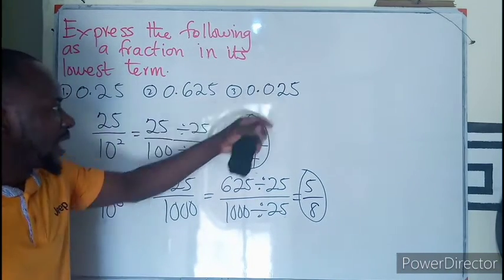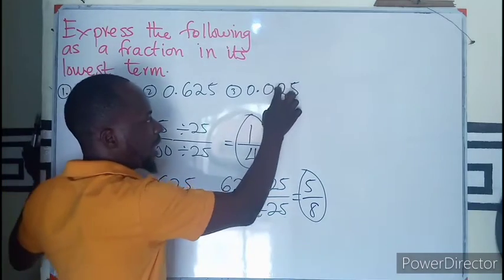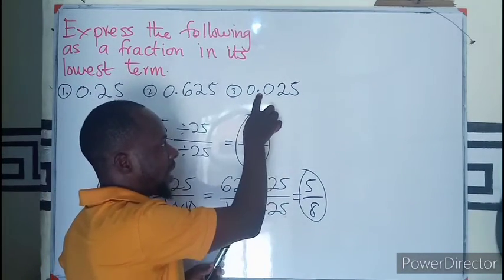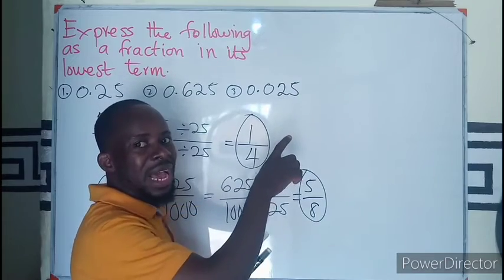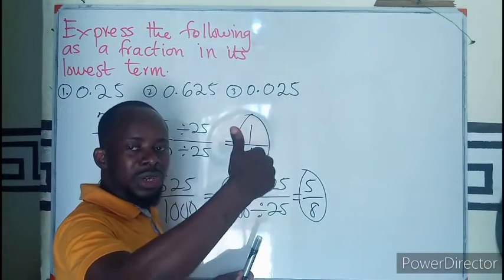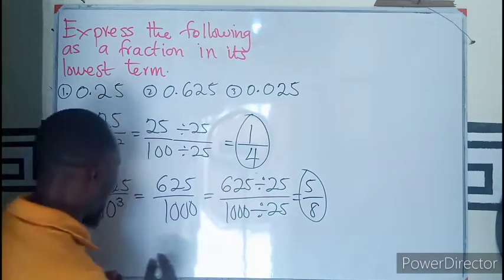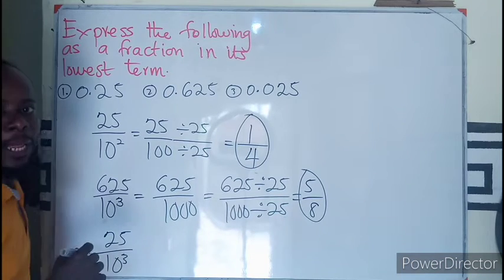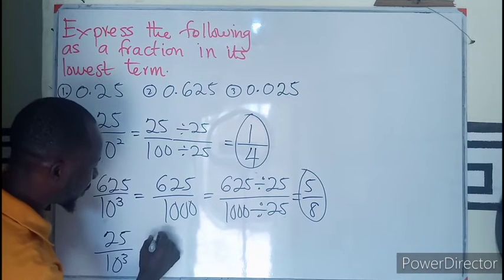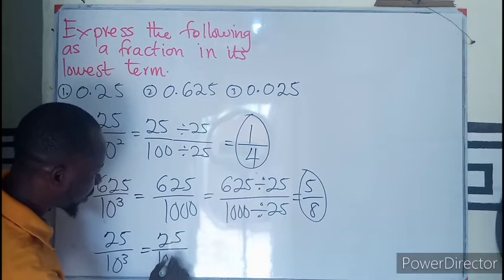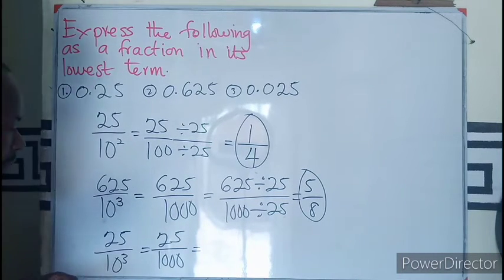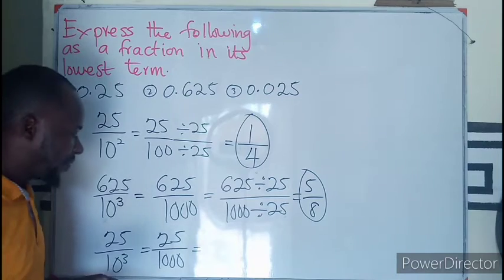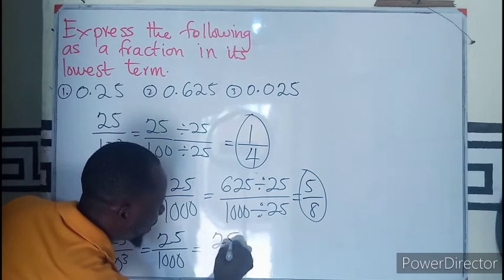Finally, how many decimal places do we have? One, two, three — there are three decimal places. The number without the decimal point would be 025, and we know a zero before a number does not add value, so we only have 25. That gives us 25 over 10 to the exponent 3, which can be written as 25 over 1000.